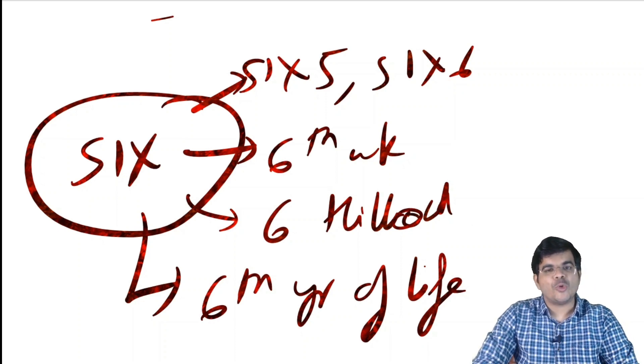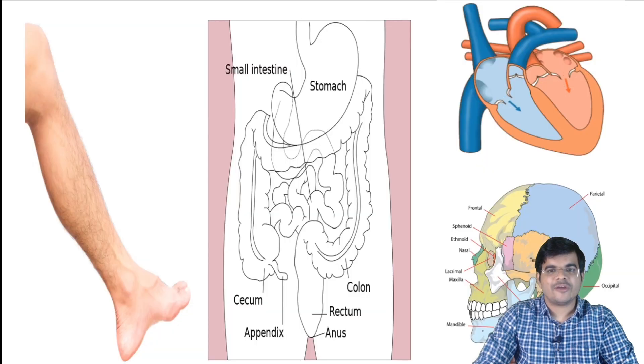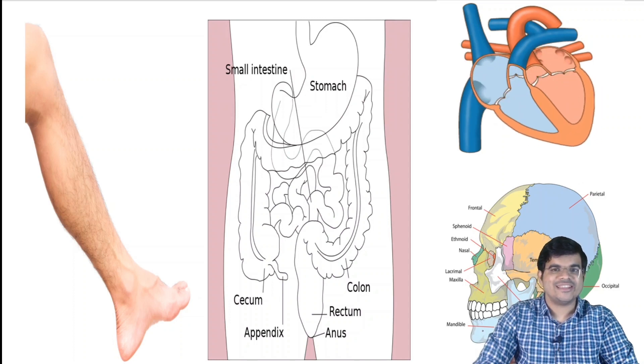When will you do a renal ultrasound to rule out Branchio-oto-renal syndrome? There are certain situations when it has to be done and it is dictated by Wang's criteria. It is not Wong's criteria, it is Wang's criteria and these situations are history of gestational diabetes in mother, family history of deafness or ear anomalies, history of limb anomalies, gastrointestinal anomalies, heart anomalies or craniofacial anomalies. In these situations, you have to do a renal ultrasound to rule out Branchio-oto-renal syndrome.